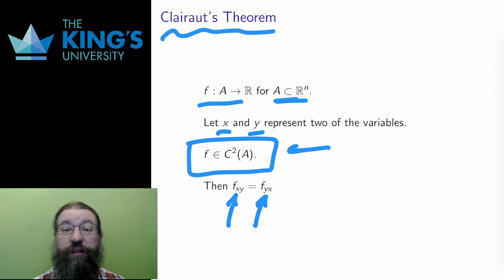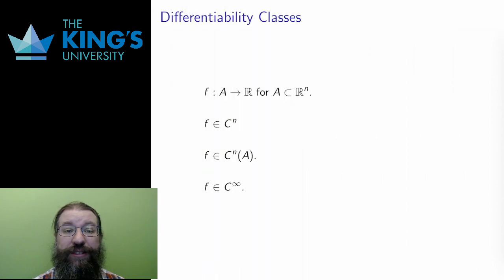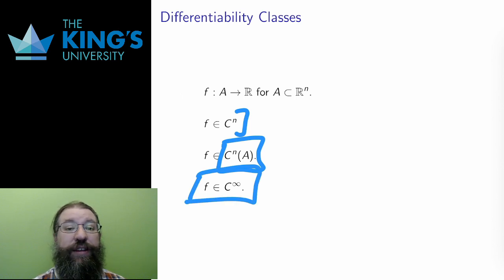This notation in the middle here, C^2, is notation that means all of the second partials exist and are continuous. This is a pretty useful notation and can be generalized. A function is in class C^n. If you want to explicitly name the domain, you can say C^n of A, where A is some subset of R^n. A function is in the class C^n if all of its nth partial derivatives exist and are continuous. And a function is in class C infinity if all of its higher partials to any degree exist and are continuous. A lot of results and theorems depend on the differentiability class of a function, so having a concise notation for this is quite convenient.